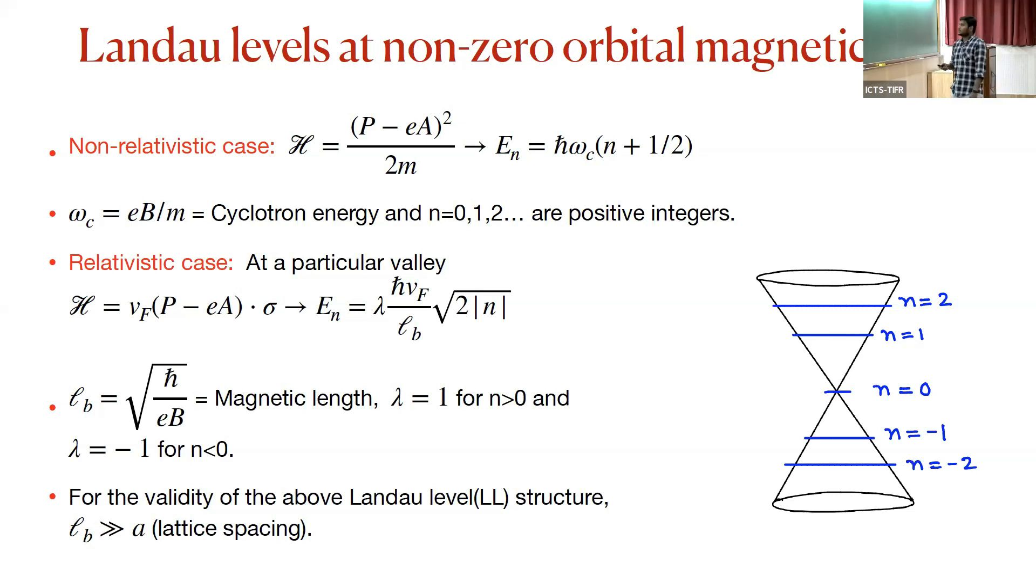The interesting fact is that initially without magnetic field you have this Dirac cone-like structure. Now in presence of magnetic field, you will get flat Landau levels with all these integers running from minus infinity to plus infinity. If you put this magnetic length, the characteristic length scale, you'll see that the energy is actually square root proportional to B. That is very different from the non-relativistic case where the energy depends on the cyclotron energy and is proportional to B. This crucial square root dependence will be important in our talk.